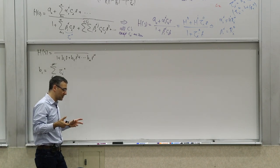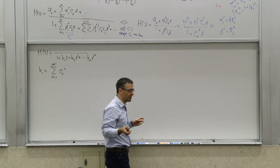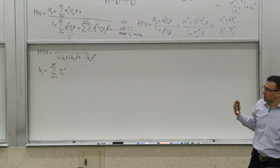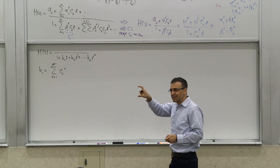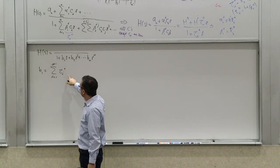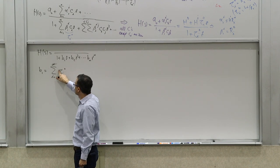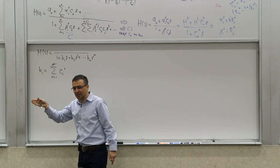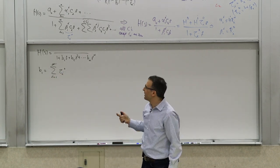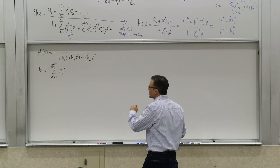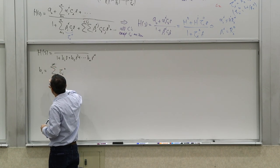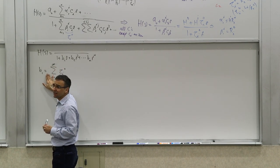Setting reactive elements to zero value means capacitors get open-circuited and inductors get short-circuited, and of course all the independent sources are nulled. Then you calculate the resistance seen by each reactive element, multiply by the component value for a capacitor, or divide the inductor value by that resistance to get these time constants. This is an exact relationship.